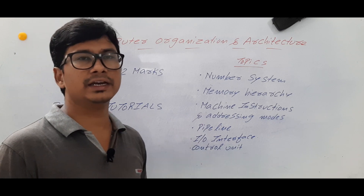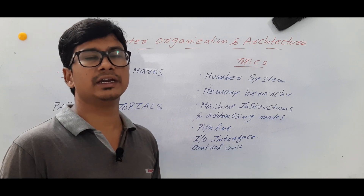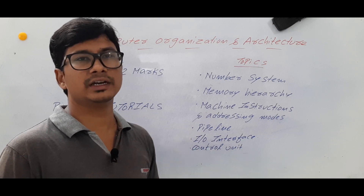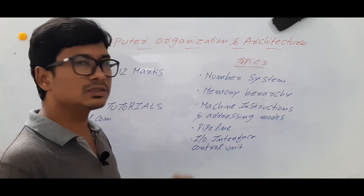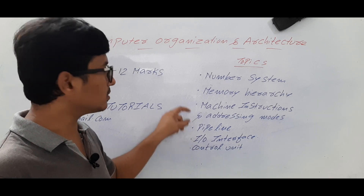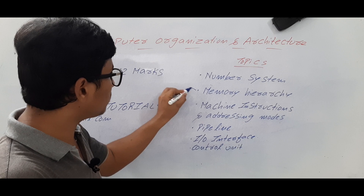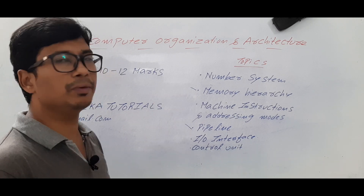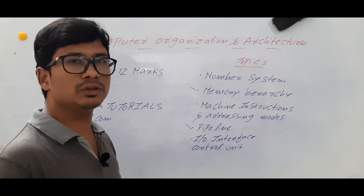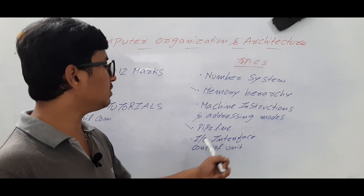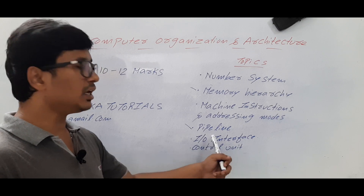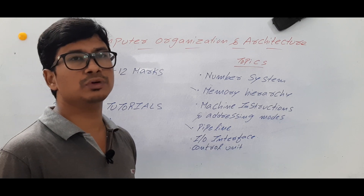Then we will discuss machine instructions and addressing modes — direct addressing, indirect addressing, register direct addressing mode, and register indirect addressing mode. Among all topics, memory hierarchy and pipeline are the two most important. We will discuss various pipeline concepts, then the I/O interface and control unit, including the Direct Memory Access concept.